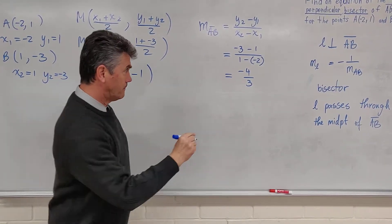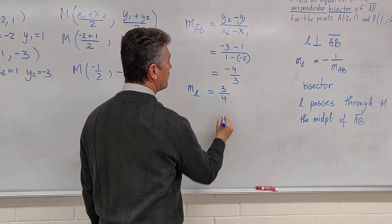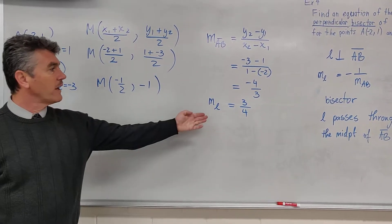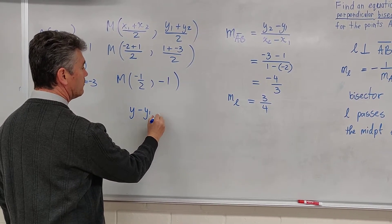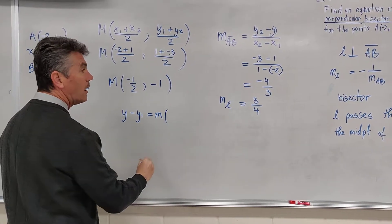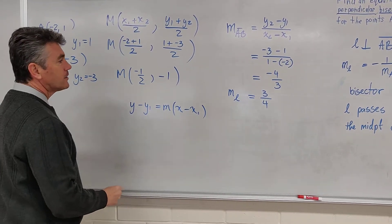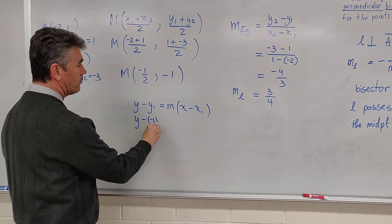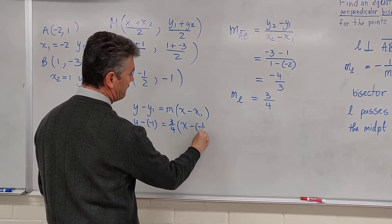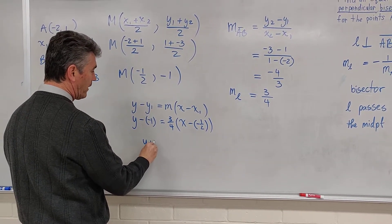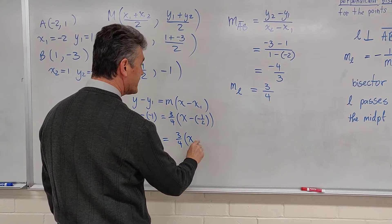This allows us now to figure out the slope of L. Since L is perpendicular to segment AB, its slope will be 3 over 4. We have a point and we have a slope, so now we can figure out the equation. We use the point-slope form: y minus y-sub-1 equals m times x minus x-sub-1. The slope is 3 over 4, so we have y minus negative 1 equals 3 over 4 times x minus negative one-half, which gives us y plus 1 equals 3 over 4 times x plus one-half.